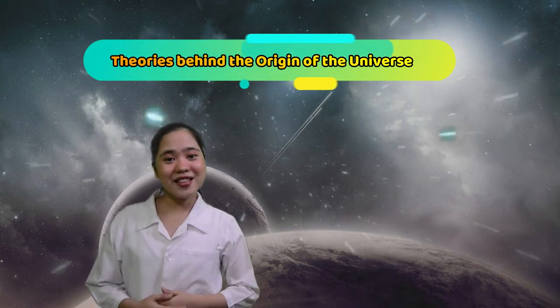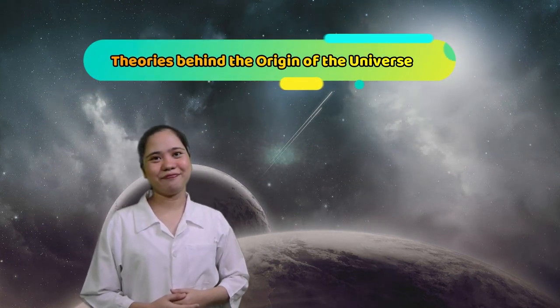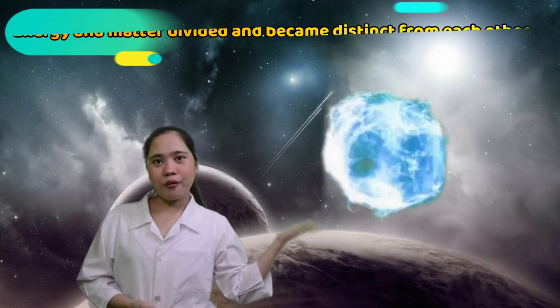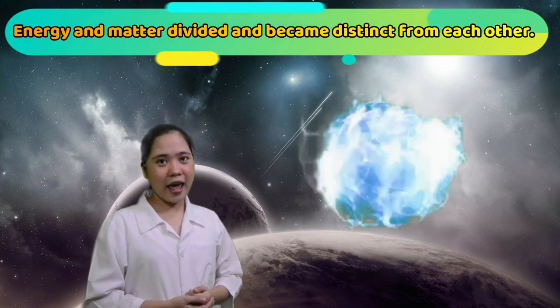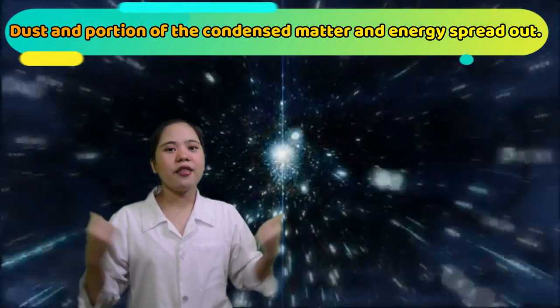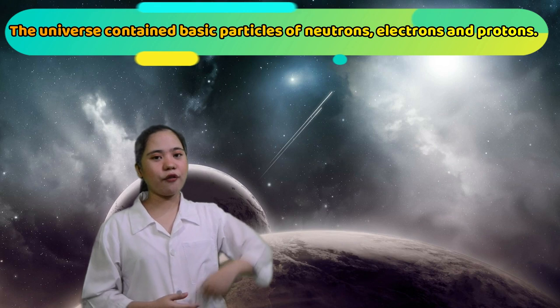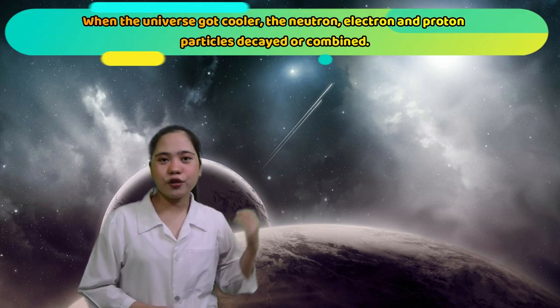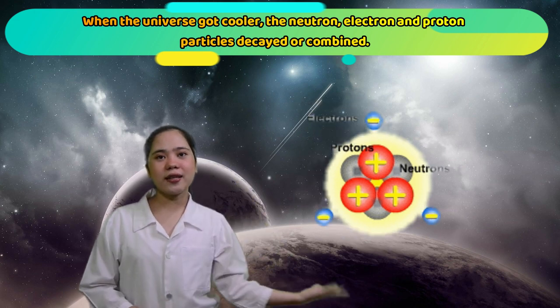These are the theories behind the origin of the Universe. First is the Big Bang Theory. It is the leading explanation about how the Universe began. In this theory, energy and water divided and became distinct from each other. After the mass explosion, a portion of condensed water and energy spread out. The Universe contained basic particles of neutrons, electrons, and protons. Then, the space expanded and cooled because of the expansion. When the Universe got cooler, the neutrons, electrons, and protons particles decayed or combined.